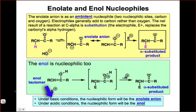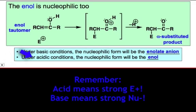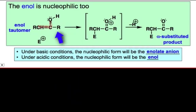Under basic conditions, in which strong nucleophiles are commonly generated, the carbonyl group can form the negatively charged enolate anion shown here, by deprotonation at the alpha carbon. Under acidic conditions, in which strong electrophiles and weak nucleophiles tend to be present, the tautomeric enol form of the carbonyl can form by the movement of a proton from the alpha carbon to the carbonyl oxygen, with a shift of the double bond from between carbon and oxygen to between carbon and carbon.